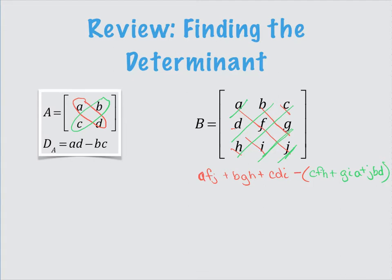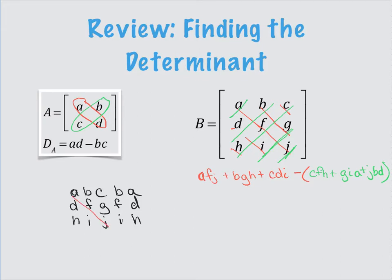One other way the book suggests is called the diagonal method. What you can do — I don't particularly like it, but you can keep track of your diagonals by rewriting the first two columns next to the matrix: A, B, C then A, B again; D, F, G then D, F; and H, I, J then I, H. This way you can clearly see the first, second, and third main diagonals, and then going the other direction the minor diagonals — so if you can't visualize the wraparound, you can look at it that way.